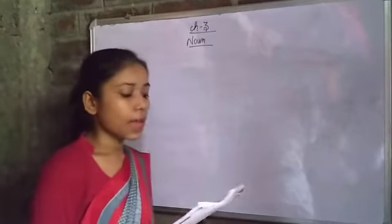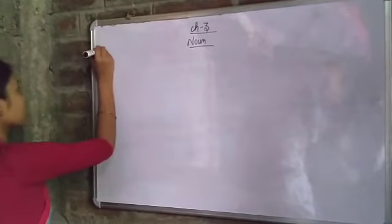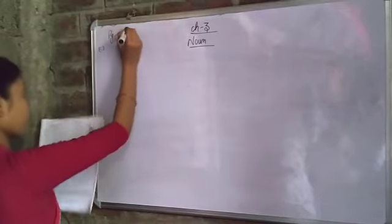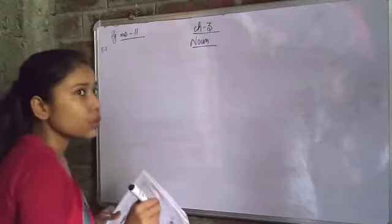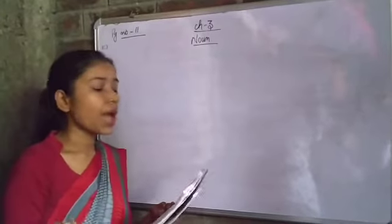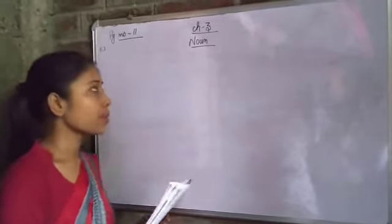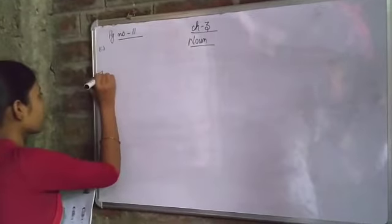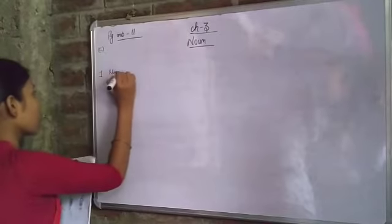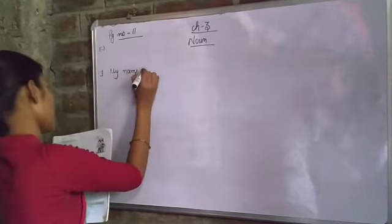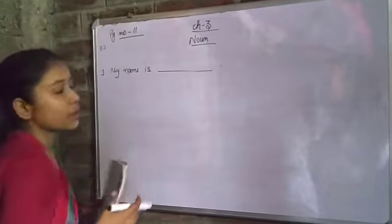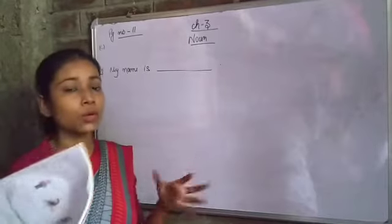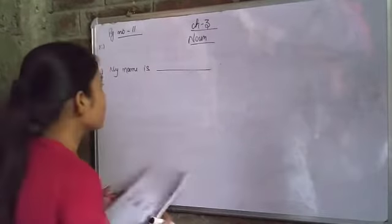Now in Question C, we have to fill in the blanks with proper nouns — from page 11. This is like a personal exercise. Number one: 'My name is ___.' You have to write your own name, and your own name is already a proper noun. Number two: 'We live in ___.' You write the name of your city.